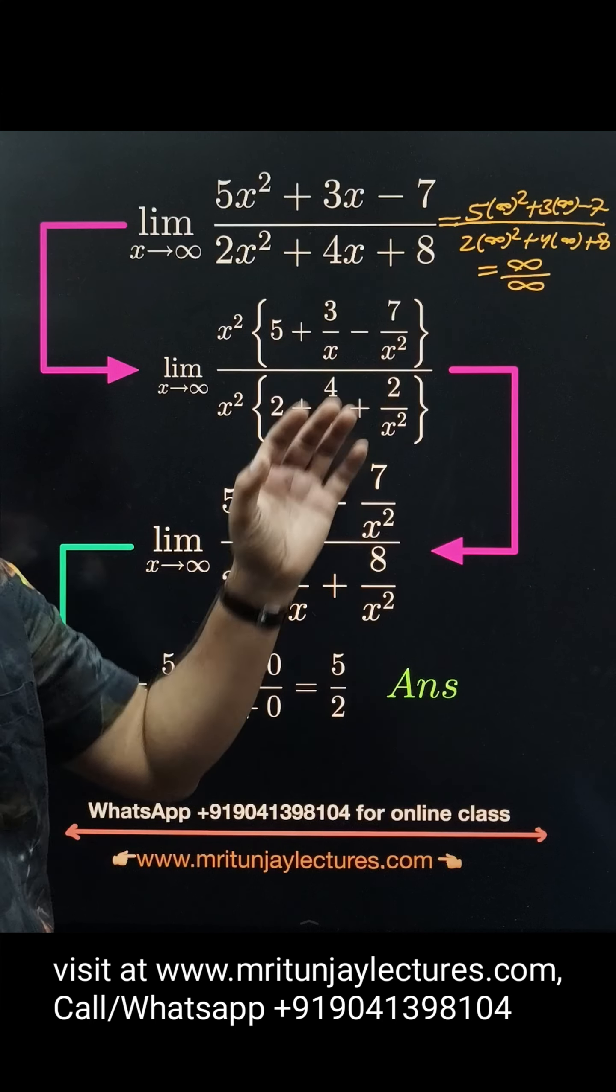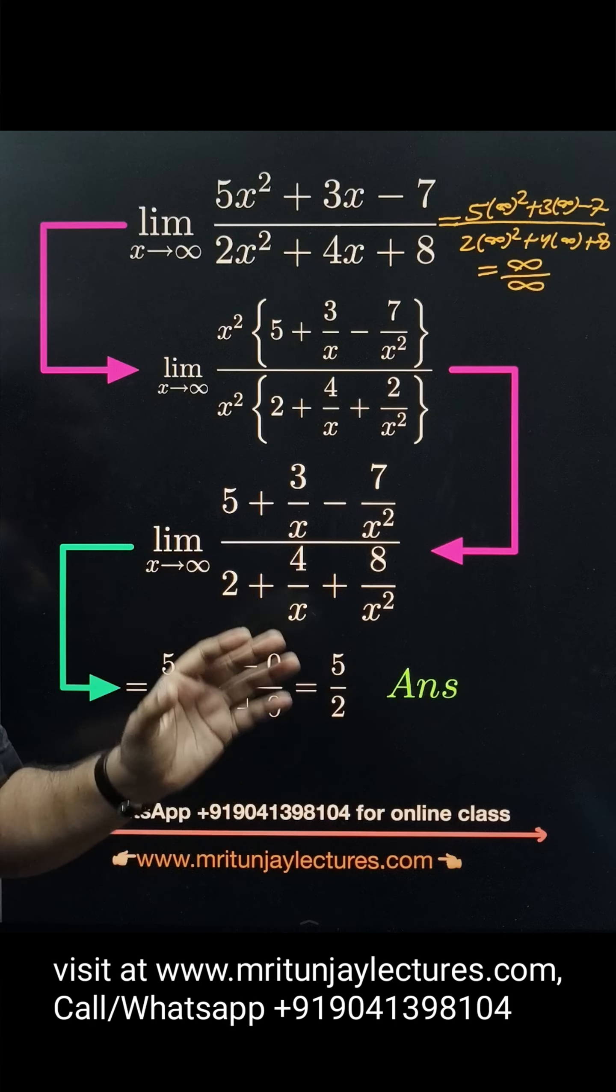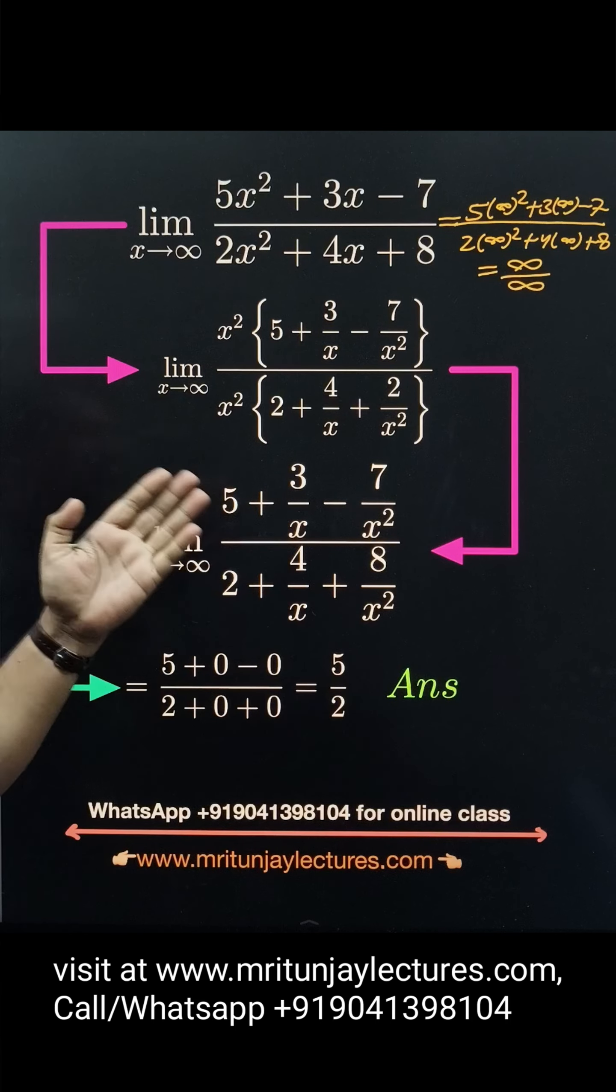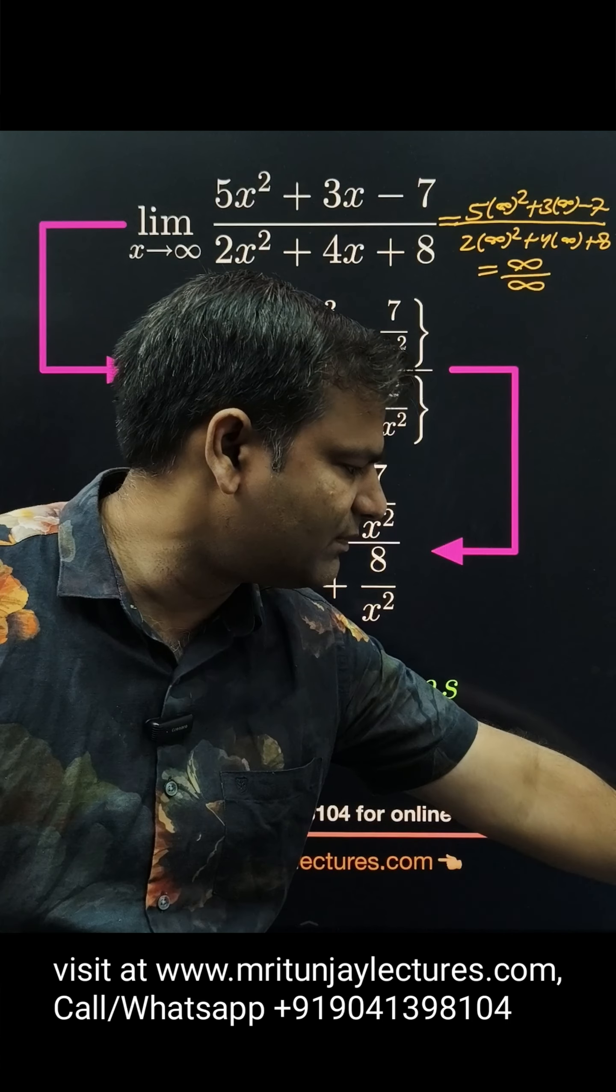Infinity over infinity is an indeterminate form. How can you solve this type of problem? You can use L'Hospital's rule or the conventional method.